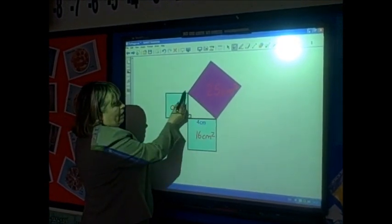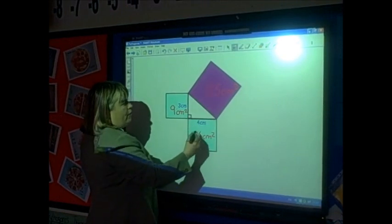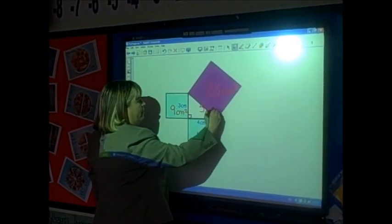To find this side of the square, which is the diagonal, I take the square root of 25, which is 5 centimetres.